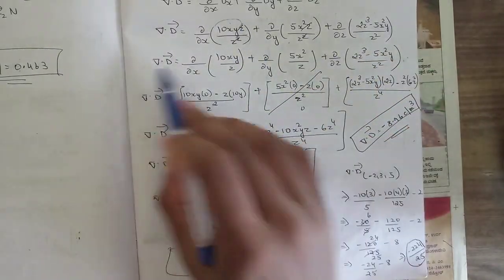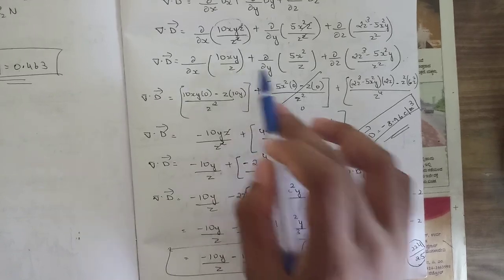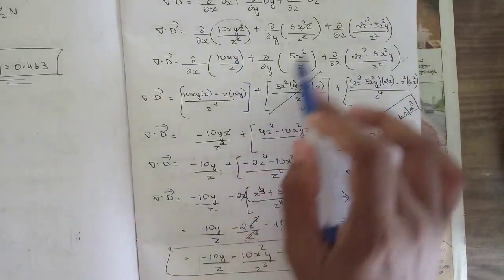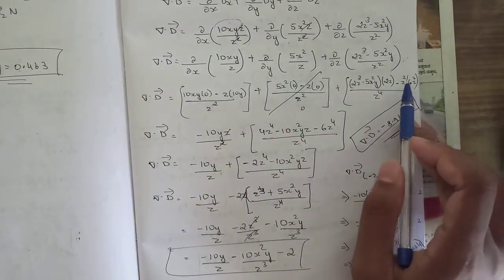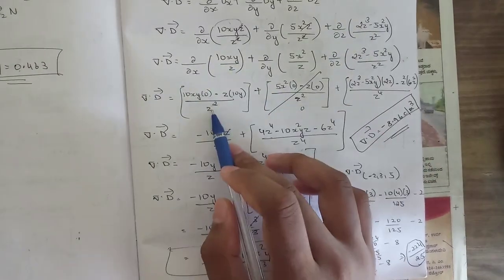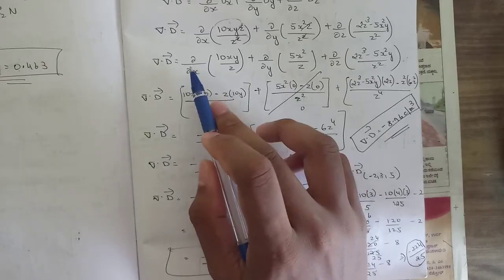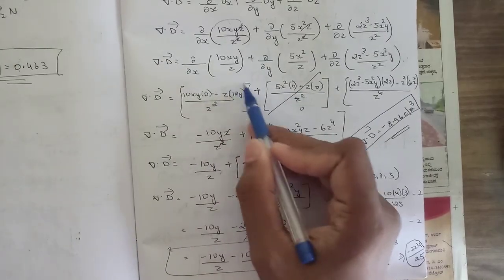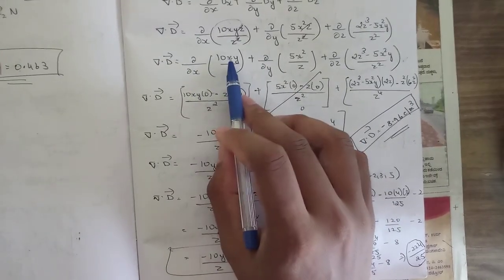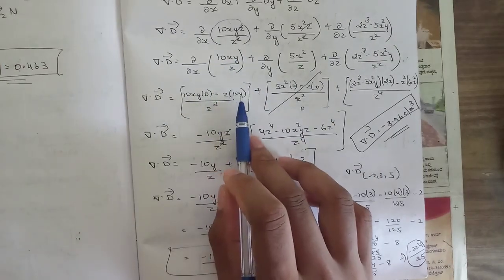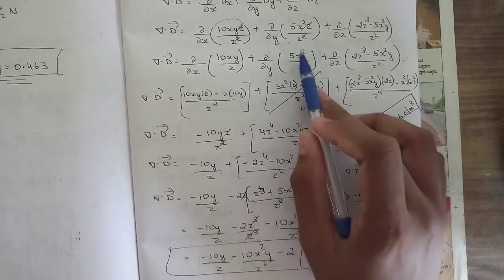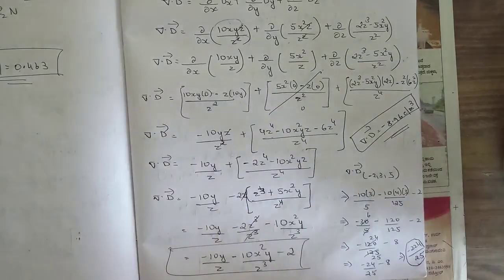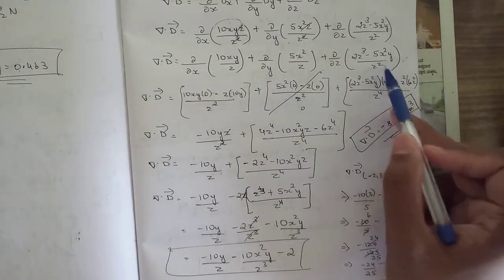After cancellation, the simplified expression is ∂/∂x(10xy/z) + ∂/∂y(5x²/z) + ∂/∂z((2z³ - 5x²y)/z²). The first two terms are of the form u/v, so we apply the quotient rule. For the first term, the denominator contains only z, so its derivative with respect to x is 0. The numerator derivative with respect to x gives 10y, keeping constants as is.